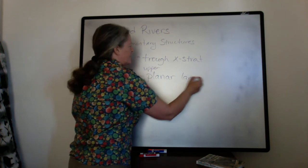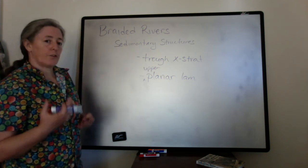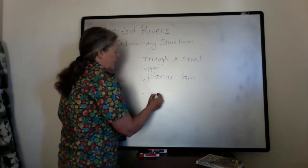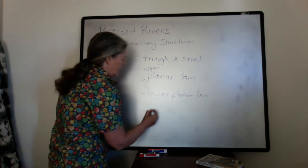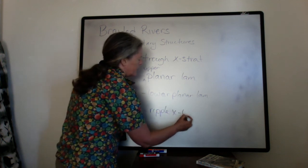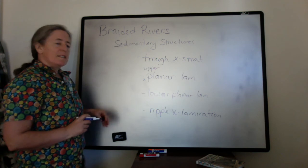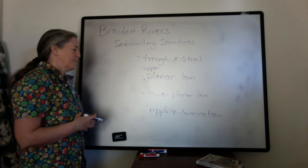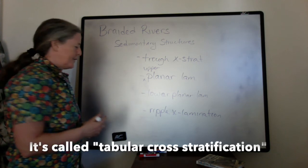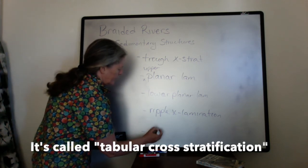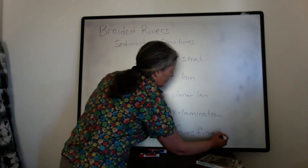Various types of trough cross stratification can form. If the flow speeds are low enough and the grains are coarse enough, you can also get lower planar lamination. It's also common along the very tops of the bars to get ripple cross lamination. In addition, the migration of the bars can create cross stratification that's not due specifically to a bedform, but to bar migration itself, giving other forms of cross stratification.